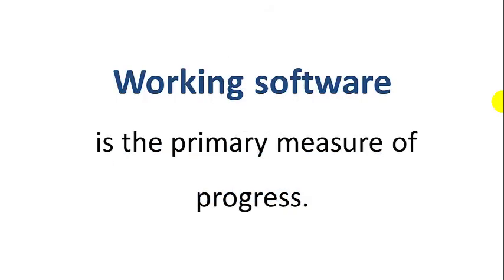Agile means always having a working version of code, and each successive version should be closer to what the customer needs. Working software is the primary measure of progress.